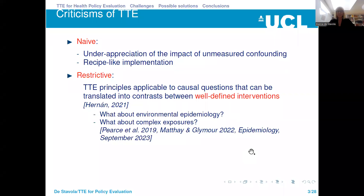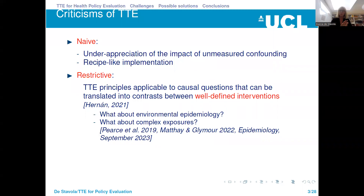The probably more important criticism has been that the approach is restrictive — restrictive in the sense that to adopt the approach, one should think of contrasts or questions that involve well-defined interventions. But not all interventions are well-definable. For example, in environmental epidemiology, how do you define exposure to pollution? Is it exposure today, tomorrow, for a month, in this location where you live or where you go to work? And what about more complex exposures? There's been a lot written recently about this. I would highly recommend looking at the September issues of Epidemiology, which has a few contributions on this.